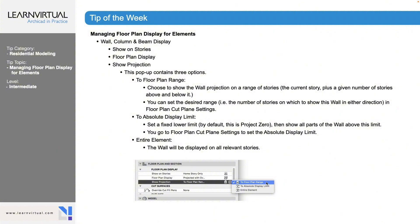In terms of showing the projection, the pop-up contains three options. The floor plan range shows the wall projection in terms of its range of stories, and you can also set a desired range. The absolute display limit sets a fixed lower limit, which you can also configure in the cut plane settings. The entire element option will display the wall on all relevant stories as the entire element.